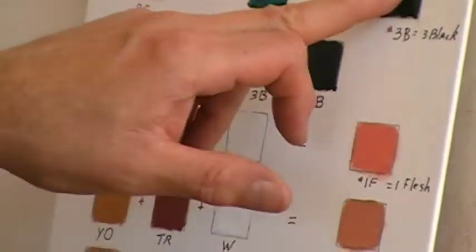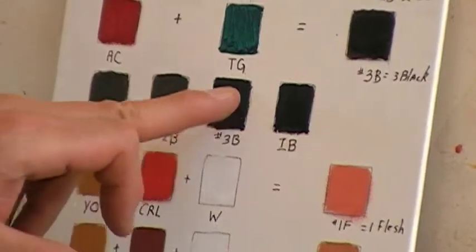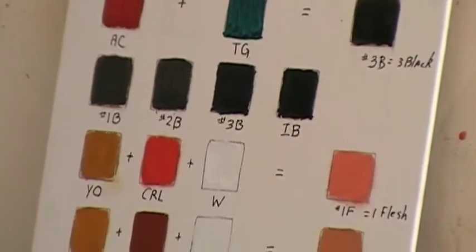Which again you should buy a tube of because it's very cheap. And it's a blue black. And you can see that my intense black is pretty close, maybe a little bit more intense than the ivory black.